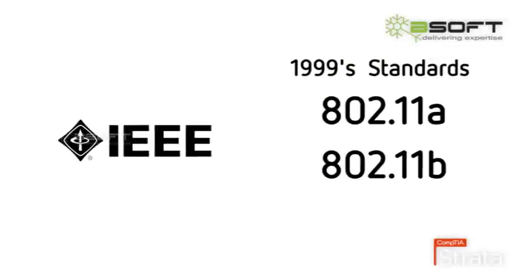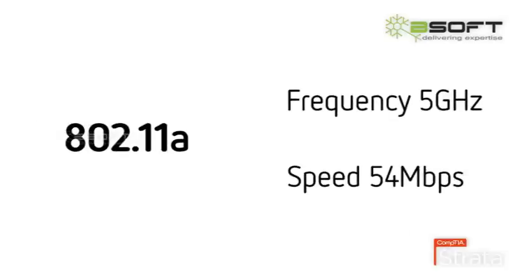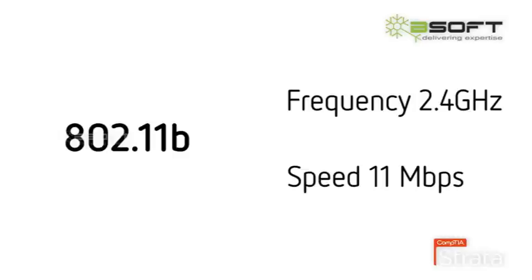In 1999, two new standards were released: IEEE 802.11a and 802.11b. The 802.11a standard used 5 GHz frequency with a maximum data transfer speed of 54 Mbps. Though it was faster than IEEE 802.11 Legacy, not many people preferred it. The 802.11b standard, also released the same year, used 2.4 GHz frequency with a maximum data transfer speed of up to 11 Mbps. Despite its lower speed, 802.11b earned more popularity because it used the same 2.4 GHz frequency as the original IEEE 802.11 Legacy standard.